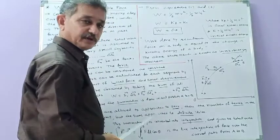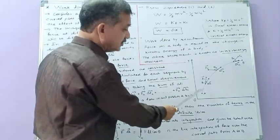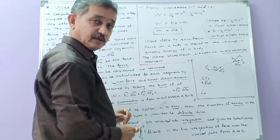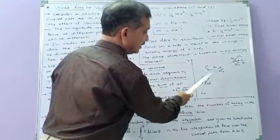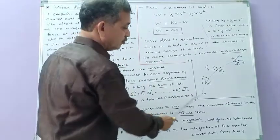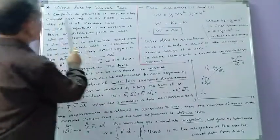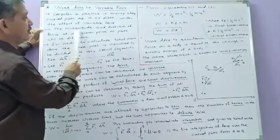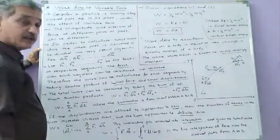Consider a particle moving along a curved path AB in the XY plane under the effect of variable force. At different points on the path, the forces F1, F2, F3... act in different magnitudes and directions because the force is variable. We want to calculate the total work done by this variable force.